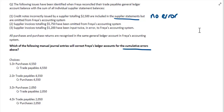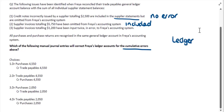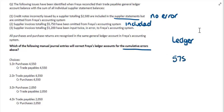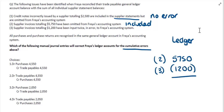For point two, supplier invoices totaling $5,750 have been omitted from Freya's accounting system, meaning they need to be now included. If we include that $5,750 in the ledger, it's going to increase the balance. For the third issue, supplier invoices totaling $1,200 have been input twice in error to the accounting system. If they've been input twice, we need to remove one of those transactions, so we take off $1,200, giving us the overall adjustment to the accounting system.